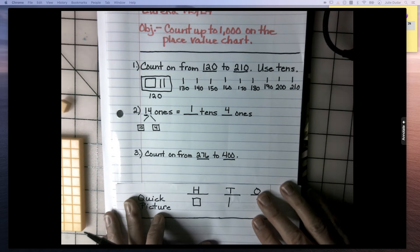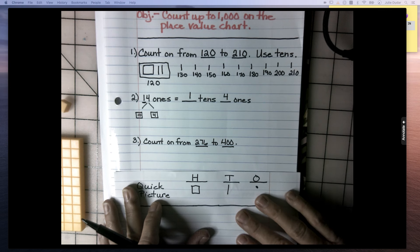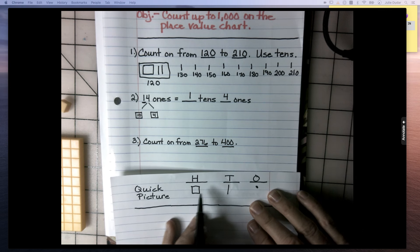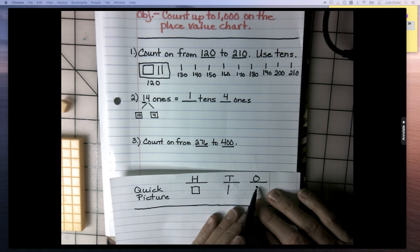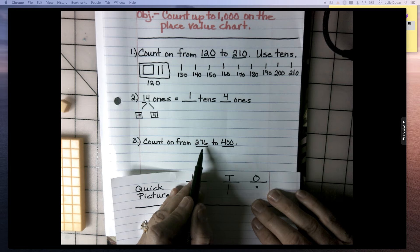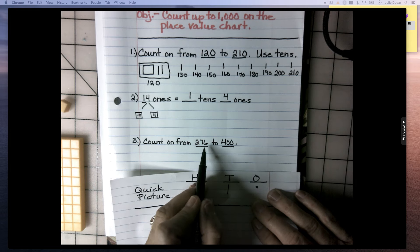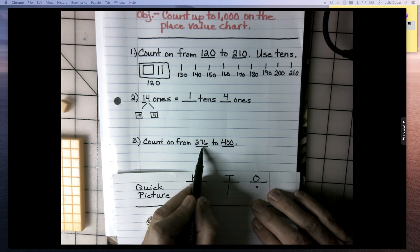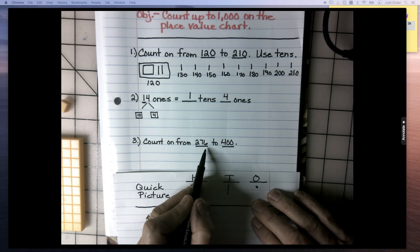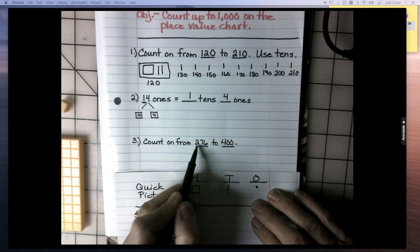Now we're going to count on from 276 to 400. Still using our quick picture, a square for hundreds, a stick for tens, and a dot for ones. 276. When I look at this number, I see it's not a benchmark number. It doesn't end in a zero. So our first job is to get this 76 to a number that ends in zero. And I know after 76, the closest number that ends in a zero is 80. So our job is going to be to get to 280. But let's draw this first.